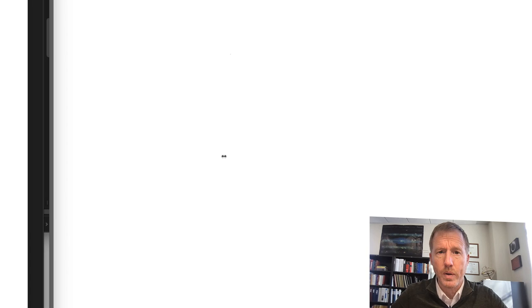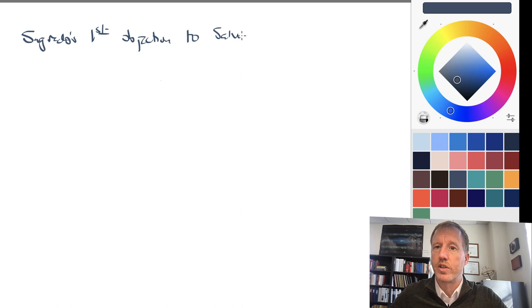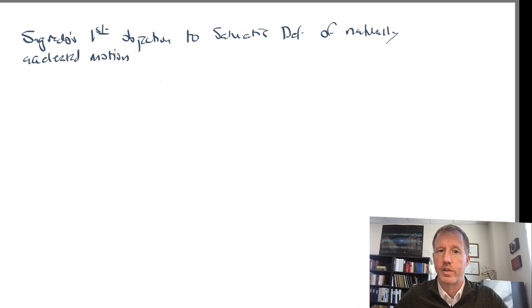So what is he saying? Let's sketch out what his argument is. So this is Segredo's objection, Segredo's maybe first objection, to Salviati's definition, definition of naturally accelerated motion. Objection, that is, that naturally accelerated motion undergoes uniform acceleration, or objects undergo uniform acceleration. So here's Objection 1.